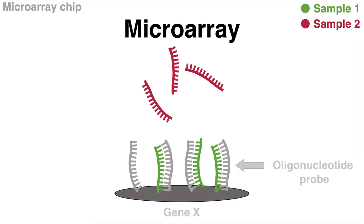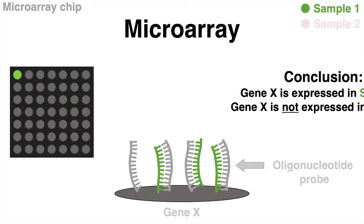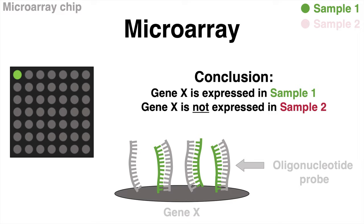Sample 2, however, does not contain complementary cDNA molecules and is washed away. The spot we were looking at appears green after laser scanning, which tells us that gene X is expressed in sample 1 but not in sample 2.